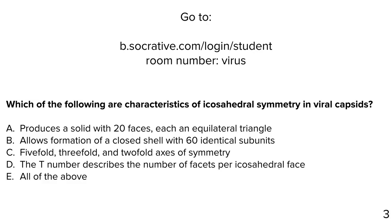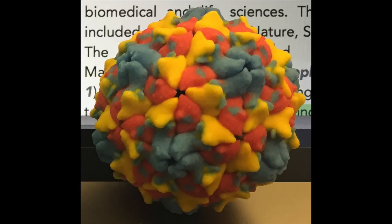Clicker question: which are characteristics of icosahedral symmetry of viral capsids? A) produces a solid with 20 faces each an equilateral triangle; B) allows formation of a closed shell with 60 identical subunits; C) five-, three-, and two-fold axes of symmetry; D) the T number describes the number of facets per icosahedral face; E) all of the above. Most of you got E — all of the above. By the way, if you look at this 3D-printed poliovirus, you can count five blue copies at a pentamer and six copies at a hexamer — these models are not only beautiful but good for understanding symmetry.